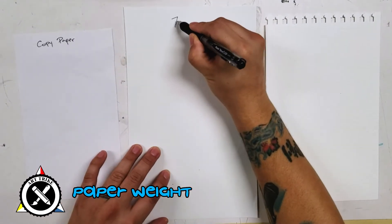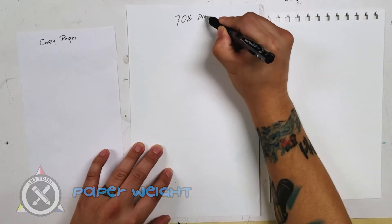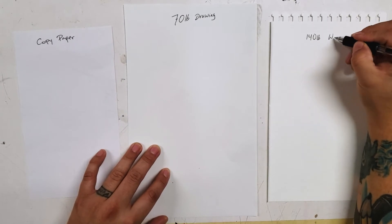Okay, let's talk about paper weight. We have copy paper, 70 pound drawing paper, and 140 pound watercolor paper. All this means is the thickness of it.